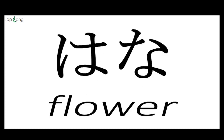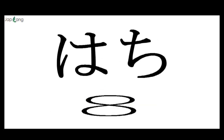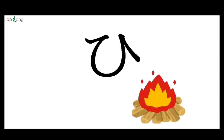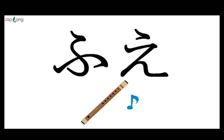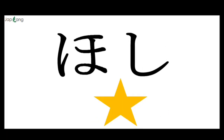Vocabulary examples: Hana means flower. Hashi means bridge. Hachi is number eight. Hatachi means twenty years old. Hi means fire. Hito means person. Fue means flute. Fune means ship. Hoshi means star.